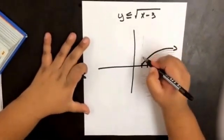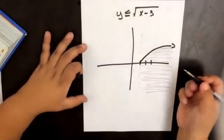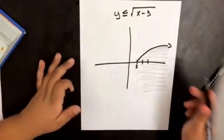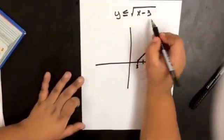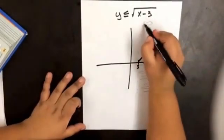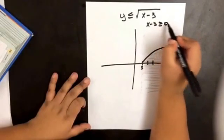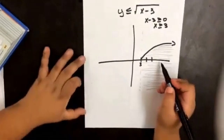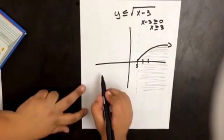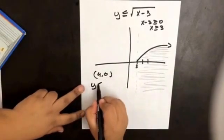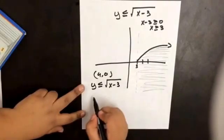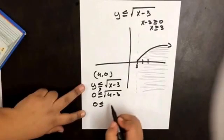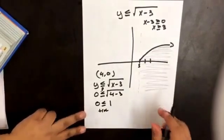As you can see, I'm only shading the values greater than 3, and that is because of our domain. If we set what's inside the radical greater than or equal to 0, then x has to be greater than or equal to 3. Let's test a value — what if we test (4, 0)? So y is less than or equal to the square root of x minus 3: is 0 less than or equal to the square root of 4 minus 3? Is 0 less than 1? That is true, so our shaded area is correct.